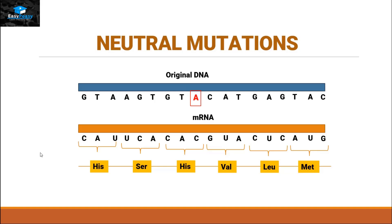In this case, a mutation occurs at this area — guanine gets replaced by adenine. This adenine will make a complementary nucleotide in messenger RNA, and that will be uracil. Now CAU also codes for histidine, so the sequence of amino acids will not be changed, because CAU and CAC both code for histidine.